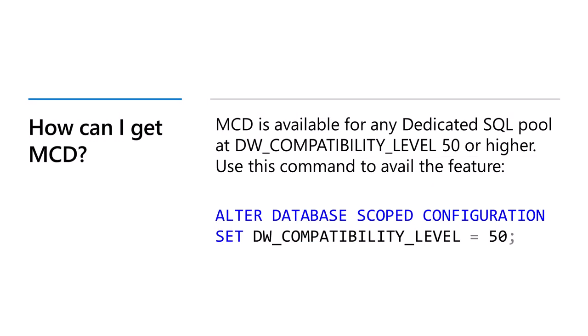Multi-column distribution is available in dedicated SQL pools with DW compatibility level of 50 or higher. Use the simple ALTER DATABASE SCOPED CONFIGURATION SET command to change the DW compatibility level of your connected dedicated SQL pool. For more information, please read the Tech Community blog post on multi-column distribution. Hope you enjoy using this feature. Thank you.